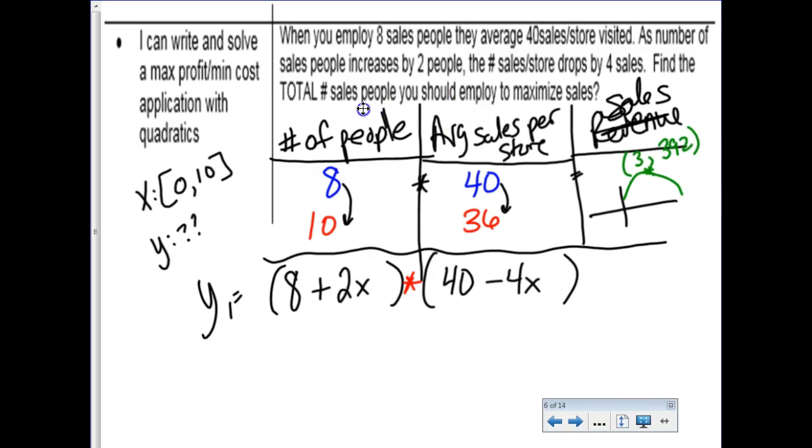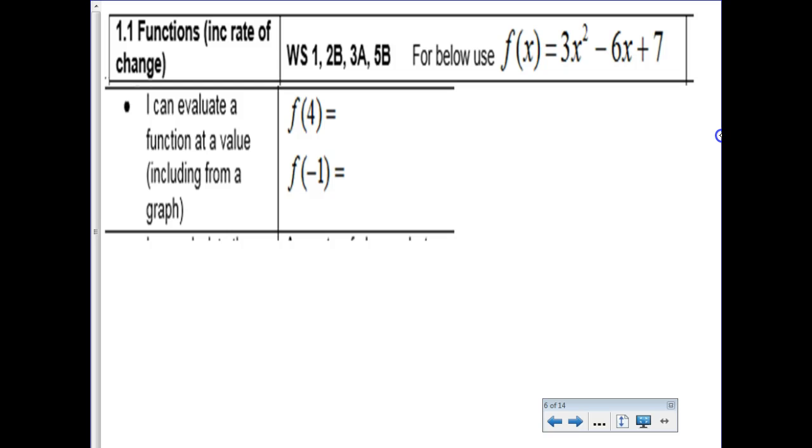So the question says, find the total number of salespeople. So they want you to find this number here. So 8 plus 2x is how you find that number. And I noticed that x is 3. So you're going to have to do 8 plus 2 times 3. So 8 plus 6 is 14 people. That's the magic answer right there. Don't tell me x equals 3 and then stop the question, because you have not actually finished the question yet. Be careful.